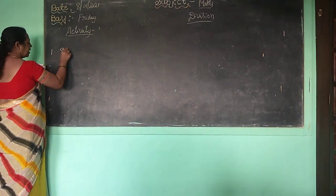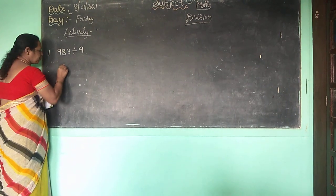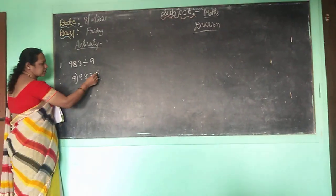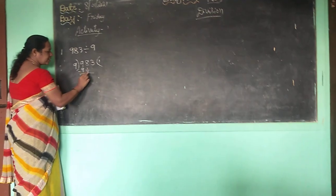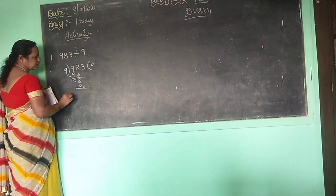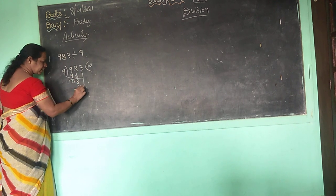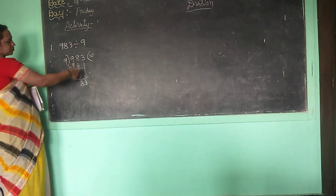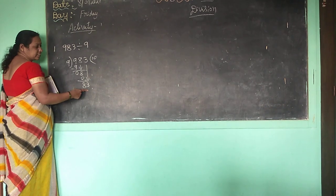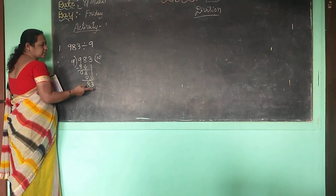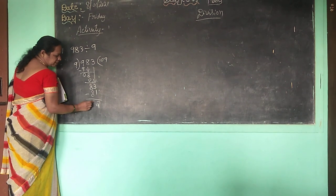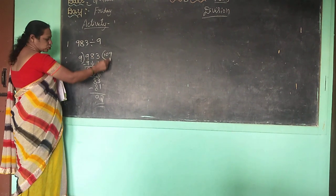983 divided by 9. From 9 you divide 983. 9 ones are 9 — here both are equal, so 9 ones are 9. Take 8 down — 8 will not go from 9, so 9 zeros are 0. Take 3 down. 9 nines are 81, 9 tens are 90 — we want only 83. So take 9 nines are 81. 3 minus 1 is 2, 8 minus 8 is 0. This is divisor, dividend, quotient, and remainder.